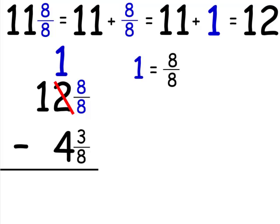Even though it may look different, 12 is the same thing as 11 and 8 8's. We'll subtract. 8 minus 3 is 5, so we have 5 8's. And 11 minus 4 is 7. So our answer is 7 and 5 8's.